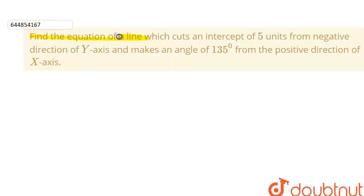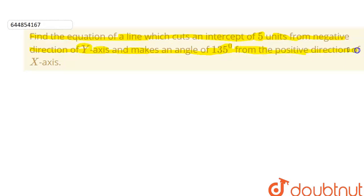Hello students. In this question, we have to find the equation of a line which cuts off an intercept of five units from the negative direction of the y-axis and makes an angle of 135 degrees from the positive direction of the x-axis.